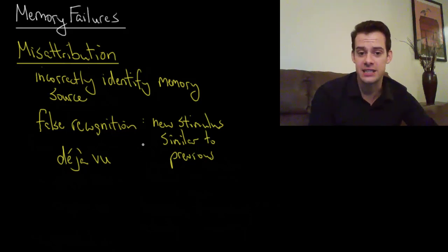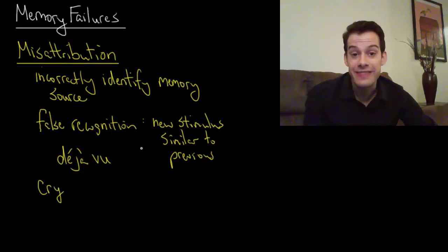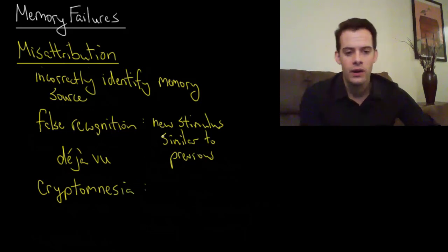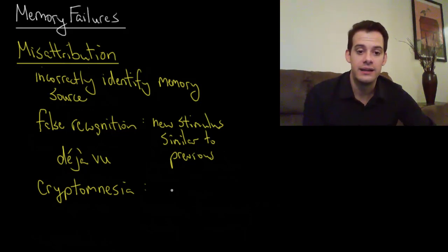Now we also have sort of the opposite situation where we have what we think is a new idea but it turns out it's a memory of an old idea and so this is called cryptomnesia. So in this case we have what we think is an original idea but it's actually a memory.